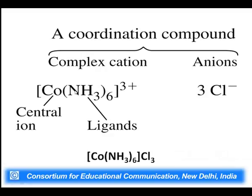The charge on the complex ion is basically the algebraic sum of the charges on the metal ion and the charges on the ligands. In this case NH3 is a neutral molecule so it does not have any charge, and cobalt has a +3 charge, so the overall charge on the complex comes out to be +3. To balance this it requires three negative counter ions, and hence this complex becomes [Co(NH3)6]3+ with three chloride counter ions.